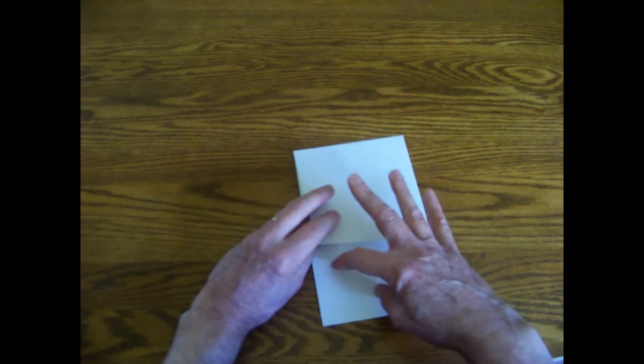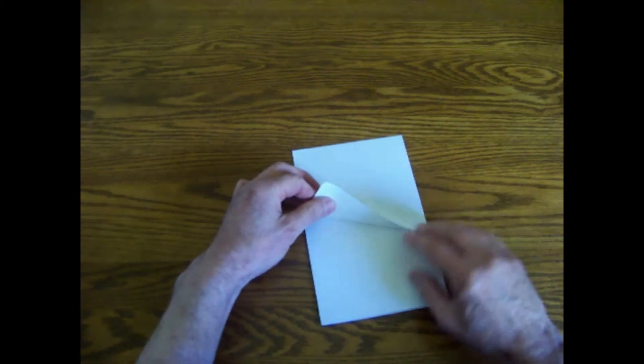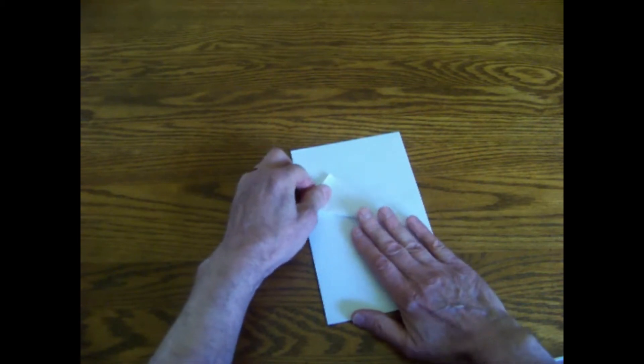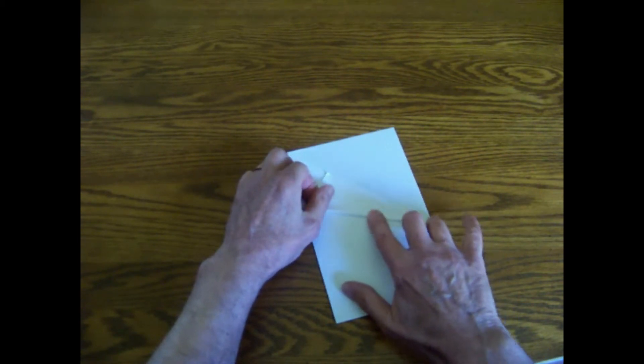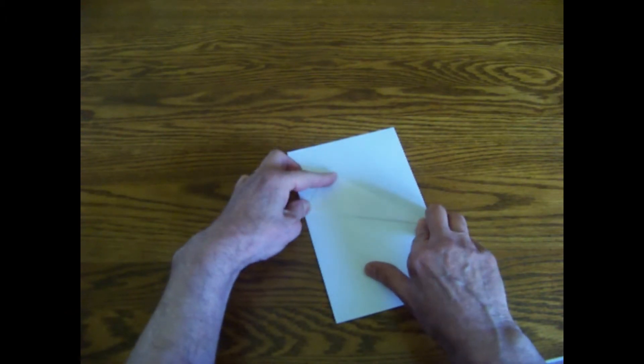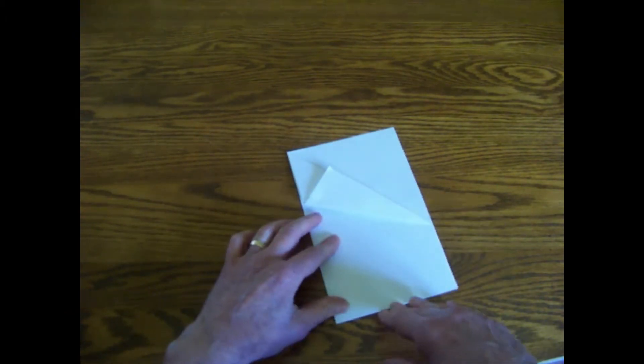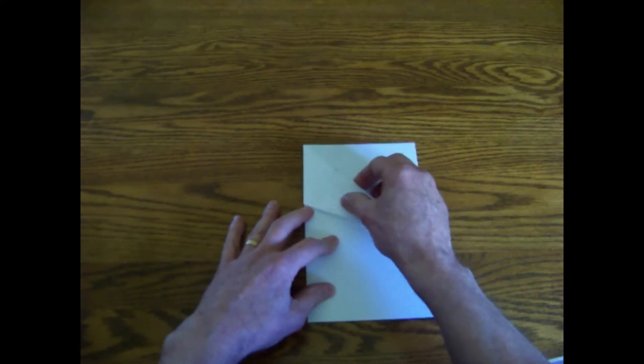Now fold the edge of the paper up to meet the diagonal. Then unfold half of the paper.